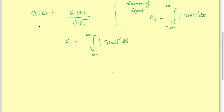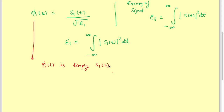So phi_1(t) is simply s1(t) normalized to unit energy. phi_2(t) is similarly s2(t) normalized to unit energy after removing the projection onto phi_1(t).